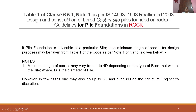Table 1 of Clause 6.5.1, Note 1, as per Indian Standard Code IS 14593:1998 (Reaffirmed 2003) — Design and Construction of Bored Cast-in-Situ Piles Founded on Rocks: Guidelines for Pile Foundations in Rock — specifies that if pile foundations are to be given in rock at a bridge site, the minimum length of socket for design purposes may be taken from Table 1, which states that the minimum socket length may vary from 1D to 4D depending on the type of rock, where D is the proposed diameter of pile.